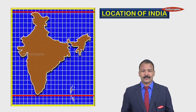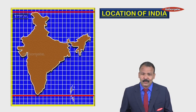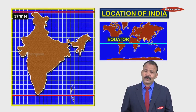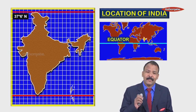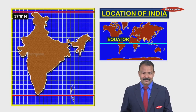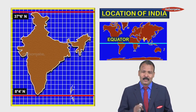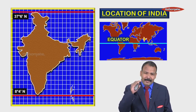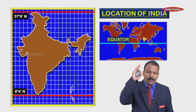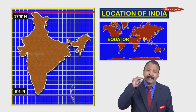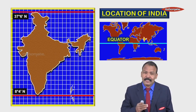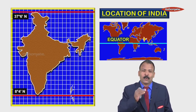India lies between two latitudes. The first one is 37 degrees 6 minutes north, and the other one is 8 degrees 4 minutes north. 'North' here means India — whether its northern or southern part — lies completely in the northern hemisphere, as we have seen it lies above the equator.